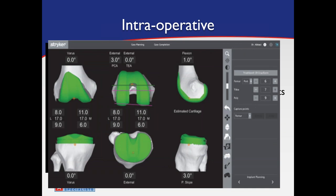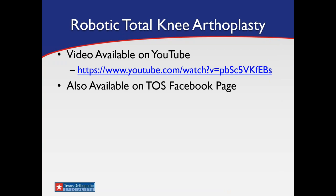We can pull up the planning screen intraoperatively at any time. If there's a balance issue, we can make small adjustments — half-degree cuts in flexion, varus, valgus, or rotation — giving us optimal control over every cut. If you'd like to see a robotic total knee in action, a video is available on YouTube and on our Texas Orthopedic Specialists Facebook page, where I walk through a total knee and show intraoperative footage.